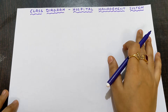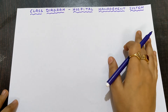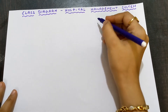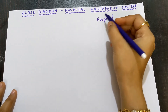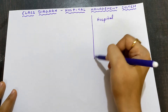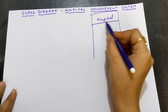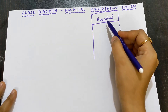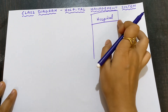For hospital management system, what could be the classes? Definitely, hospital should be a class because in hospital management system, the hospital should be present first. The building should be present — that is the base. So hospital is a class. To represent a class, we draw a box and divide it into three parts. Inside the first box, I write the name of the object, which is hospital.